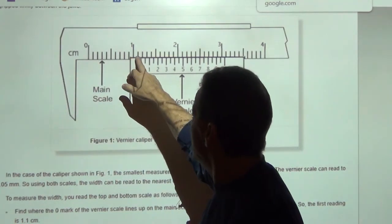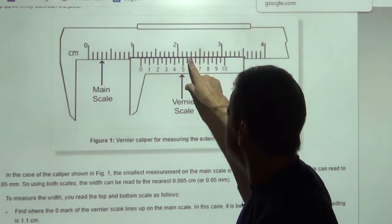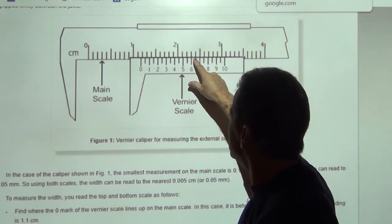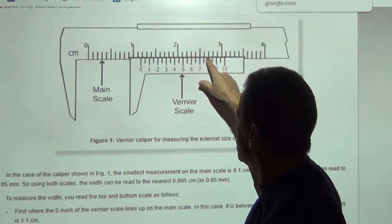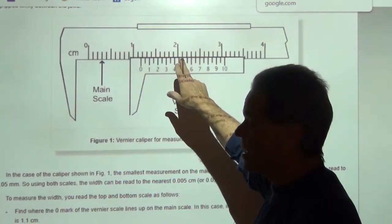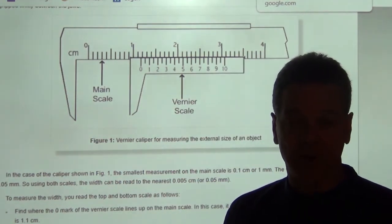You go 1.1 plus some fraction, and the fraction tells you, oh, it's this one. And once you get to this closest mark here, pretty soon the marks start to move to the left of the ones on top. So you find the one in here that lines up the very best. That's the nature of a vernier scale.